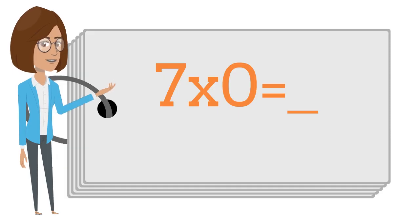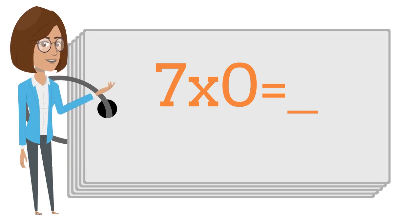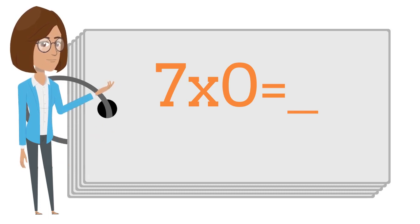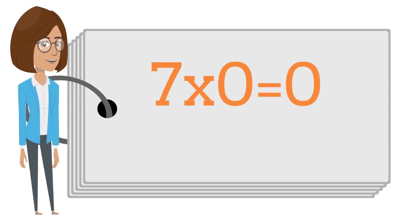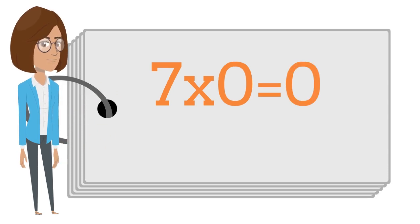Seven times zero is — say the answer out loud. Seven times zero is zero.